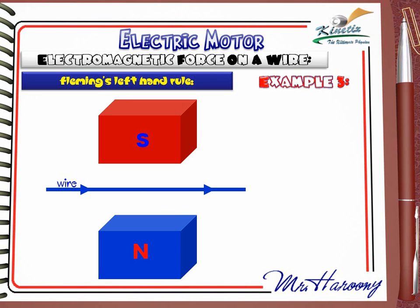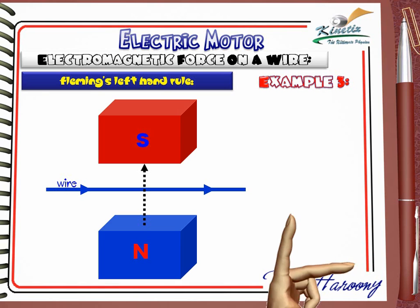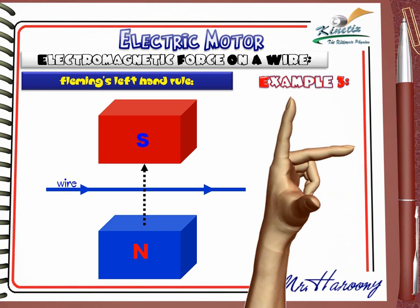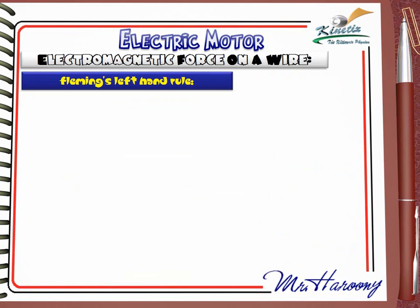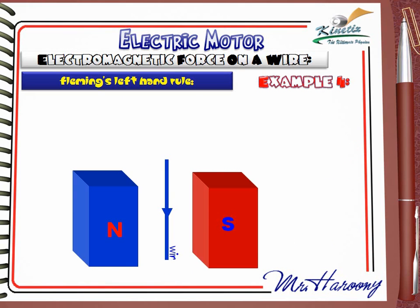Example 3: This is the magnet and this is the wire. The dotted black arrow indicates the direction of the magnetic field from north to south. Applying Fleming's left hand rule: the first finger points to the magnetic field, which in this case is upwards. The current given by the second finger is from left to right. The rule shows the wire will be pushed out of the page, as shown by the thumb.